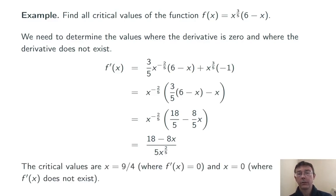So, we have two critical values. This derivative is not going to exist when the denominator is 0, so when x is 0. And the derivative is going to be 0 when the numerator is 0, so when 18 minus 8x is 0, or when x is 9/4ths. These are our two critical values.